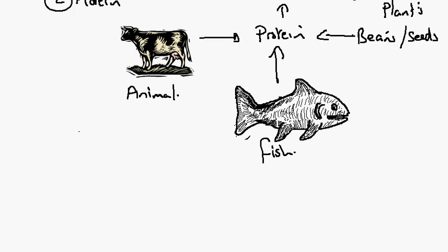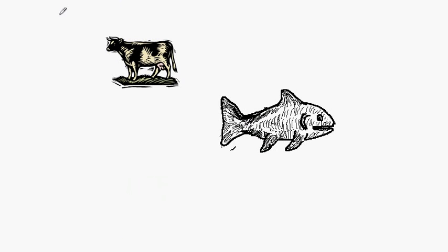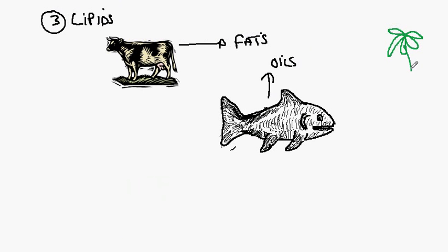Our third group would be the lipids. So from animals like this we would get fats. From fish we would get oils. And from plants we would get things like the various oils such as palm oil.